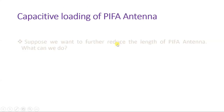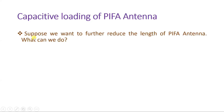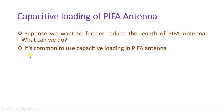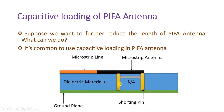Now, capacitive loading of PIFA antenna. In the market we need devices as small as possible, as mobiles are getting smaller and smaller. To reduce the size of PIFA antenna further, we use capacitive loading. By providing capacitive loading — loading a capacitor at a certain position on the antenna — further reduction in size is possible. You can change the position of this capacitor, and by having this capacitance we can reduce size further. That is the basic agenda behind capacitive loading.